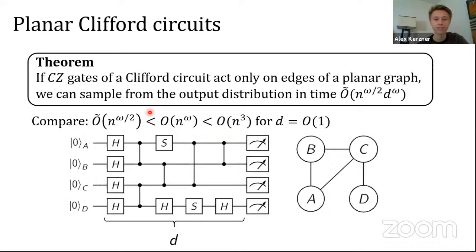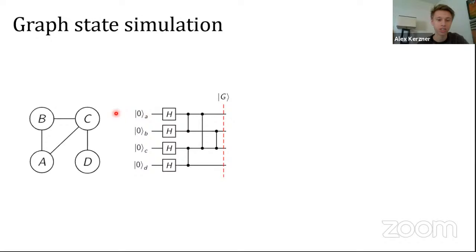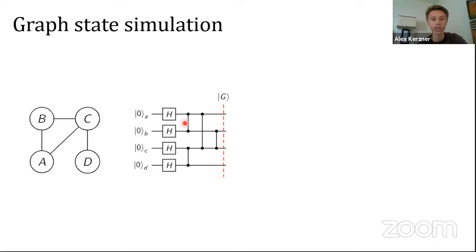We reduce this to a problem involving graph states. If you have a graph, you can form an associated graph state: replace every vertex with a qubit, bring those qubits into the |+⟩ state with a layer of Hadamards, and whenever you have an edge, apply a controlled-Z gate between those qubits. Notably, all these controlled-Z gates commute since they're diagonal, and the control and target are interchangeable. The state produced is the graph state, written |G⟩.